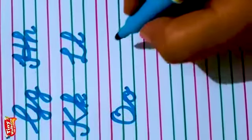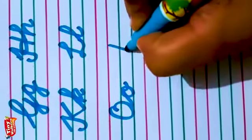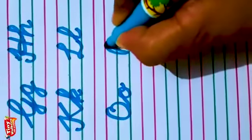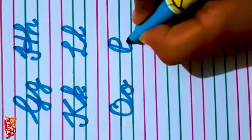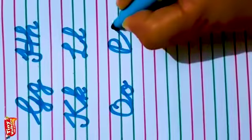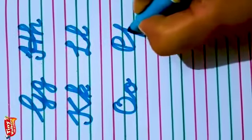After O is P. Slanting line, go up. This is capital P. Now see how to write small p. Small p.